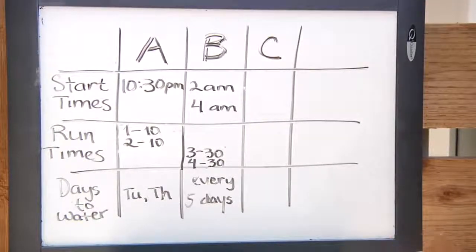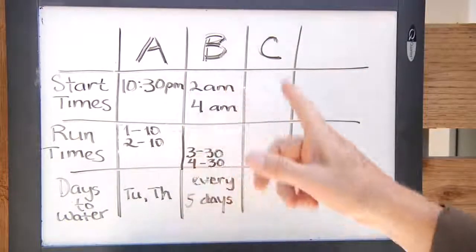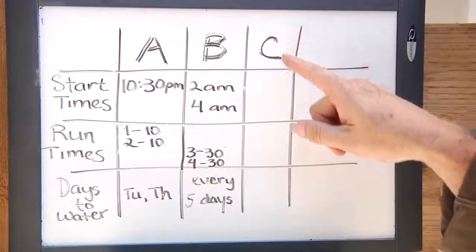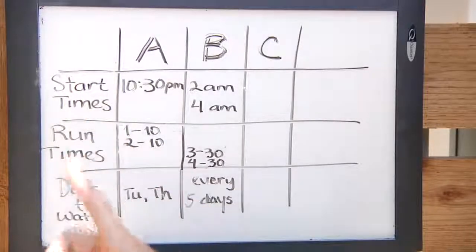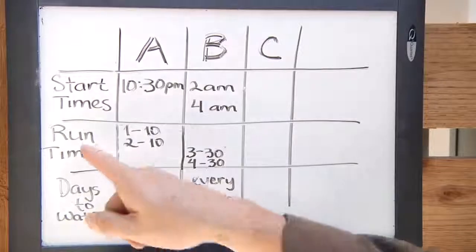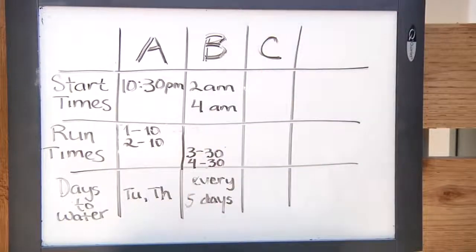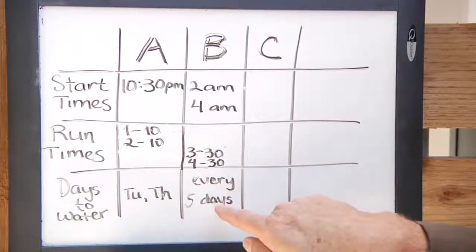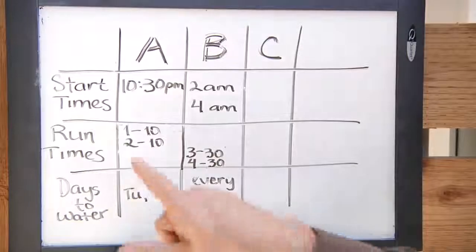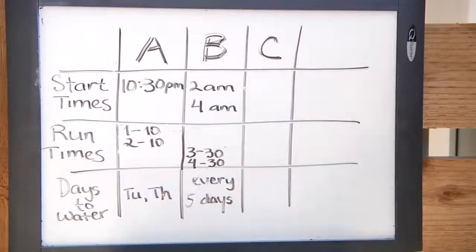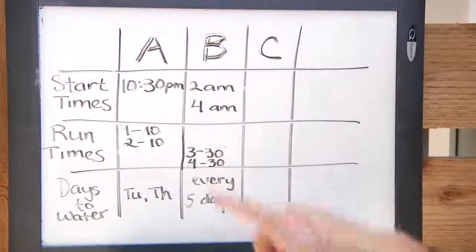To explain the use of programs A, B, and C, we have a chart here — kind of like a tic-tac-toe board with columns A, B, and C. In this example we're not putting anything in program C, but each program has all three ingredients: start time, run time, and days to water. We're splitting our run times across two programs because stations three and four have a different watering day requirement — every five days for the fruit trees — while stations one and two are the grass zone and only water on Tuesday and Thursday. Because of those different day requirements, we're splitting them over different programs.